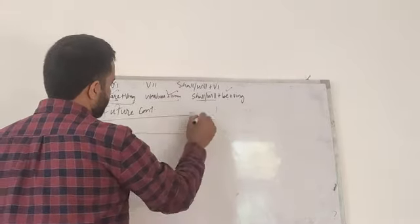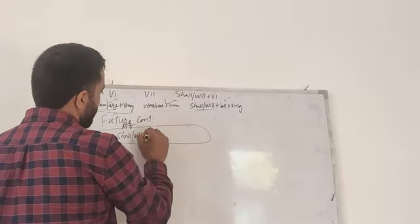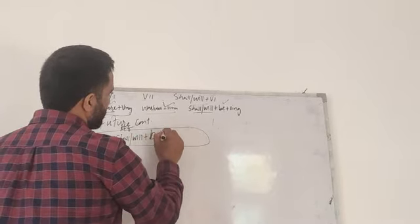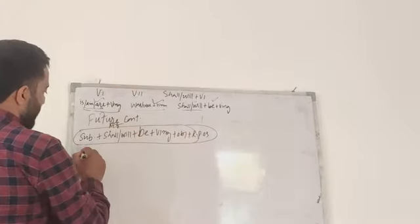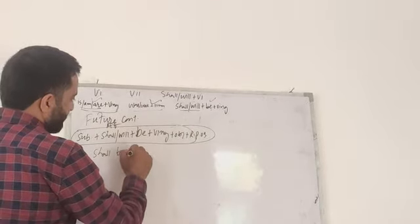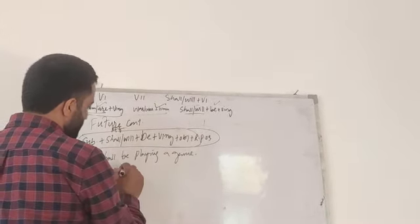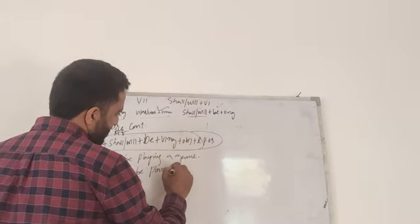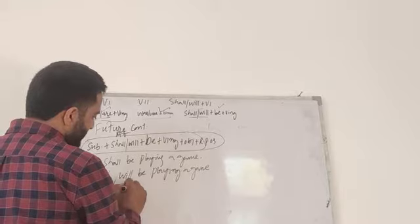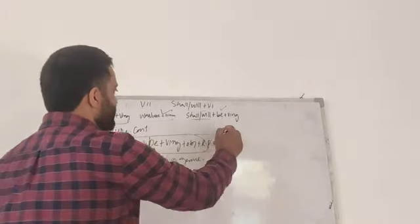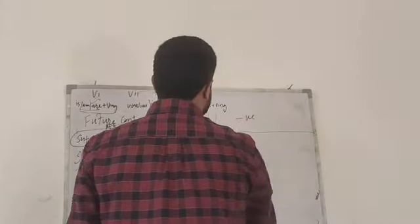Future continuous affirmative structure: Subject plus shall/will plus be plus verb in -ing form plus object plus remaining part of sentence. For example: I shall be playing a game. We shall be playing a game. You will be playing a game. He will be playing a game. She will be playing a game. They will be playing a game.